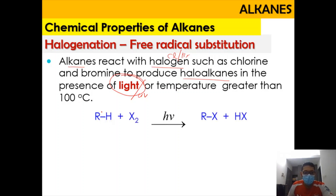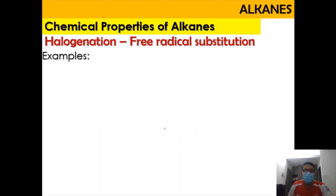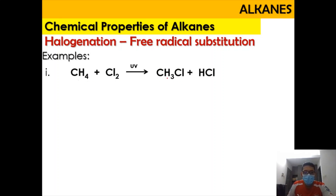If we have an alkene reacted with a halogen under UV light, one of the hydrogen atoms will be replaced with X (the halogen), and HX will be produced. With methane, the reaction produces a mixture of halomethane and hydrogen halide. For example, methane reacting with chlorine gas under UV: CH₄ becomes CH₃Cl because one hydrogen is replaced with chlorine, and HCl is also produced.